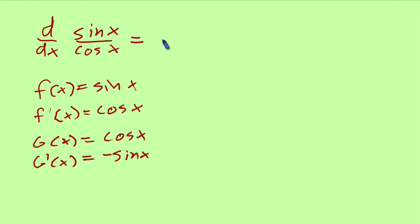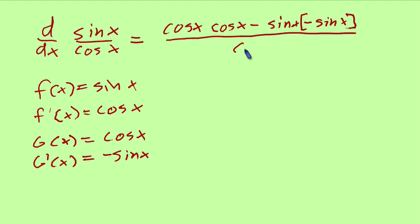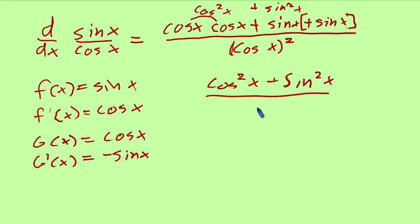Alright, low d high: cosine of x times the derivative of sine of x is cosine of x. Minus high d low: sine of x times the derivative of cosine of x, negative sine of x, over low squared cosine of x squared. Let's simplify this and see where it leads us. This will equal cosine squared of x. These negatives cancel and then we get sine squared of x. So we got cosine squared plus sine squared over cosine squared.